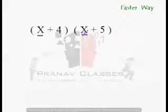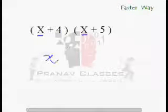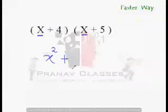So, once again, multiply the first term with the first term to get the first term of your answer. x times x is x square. Now, find the middle term.